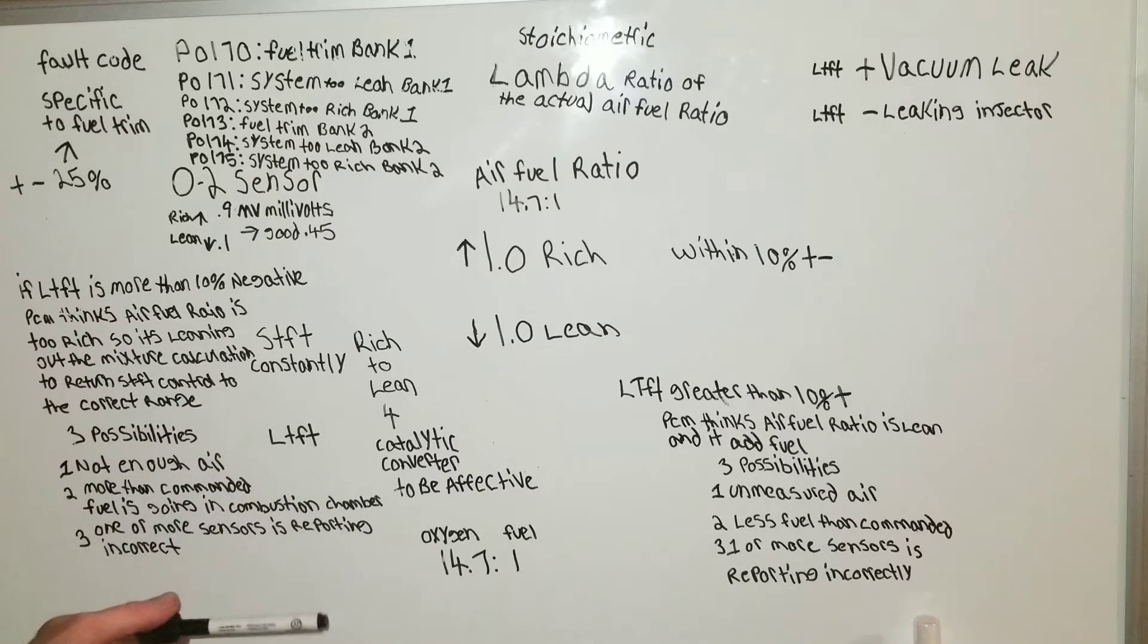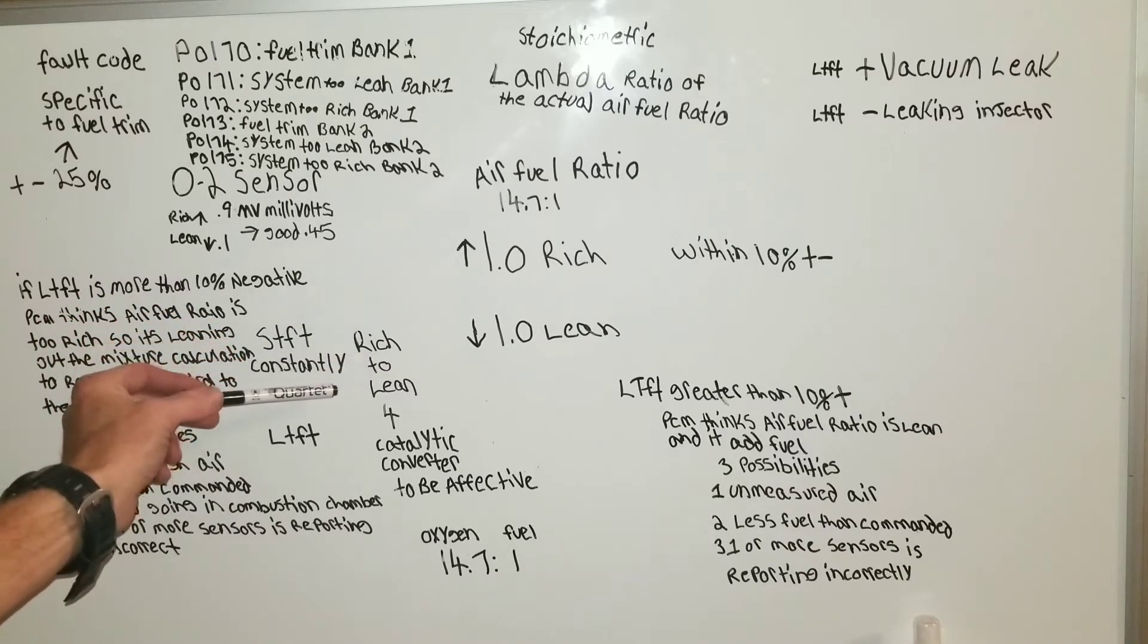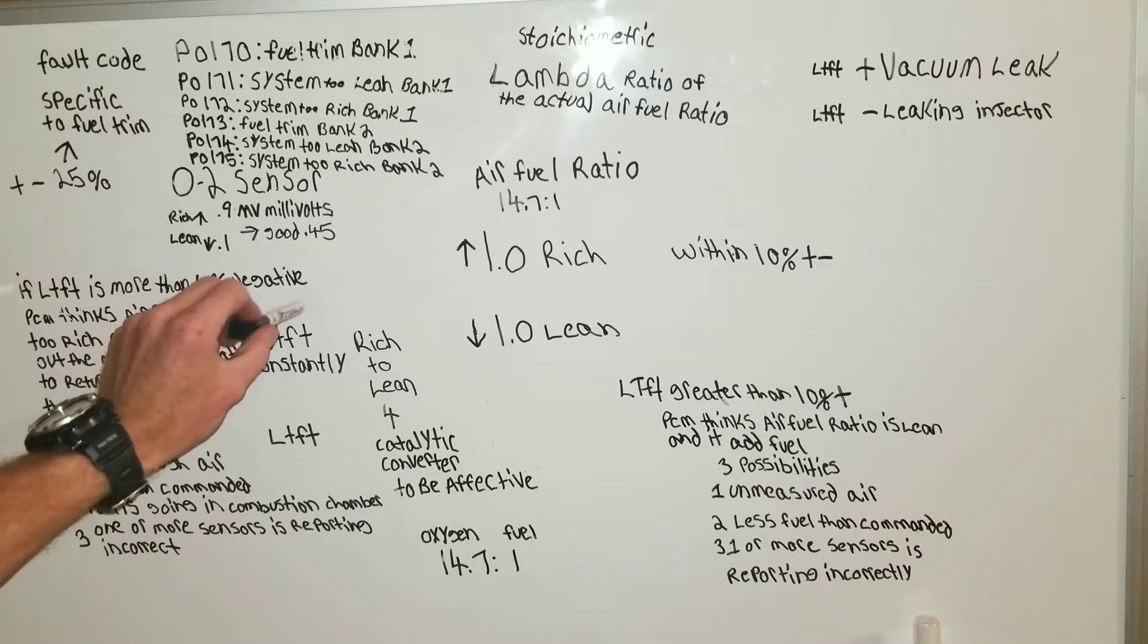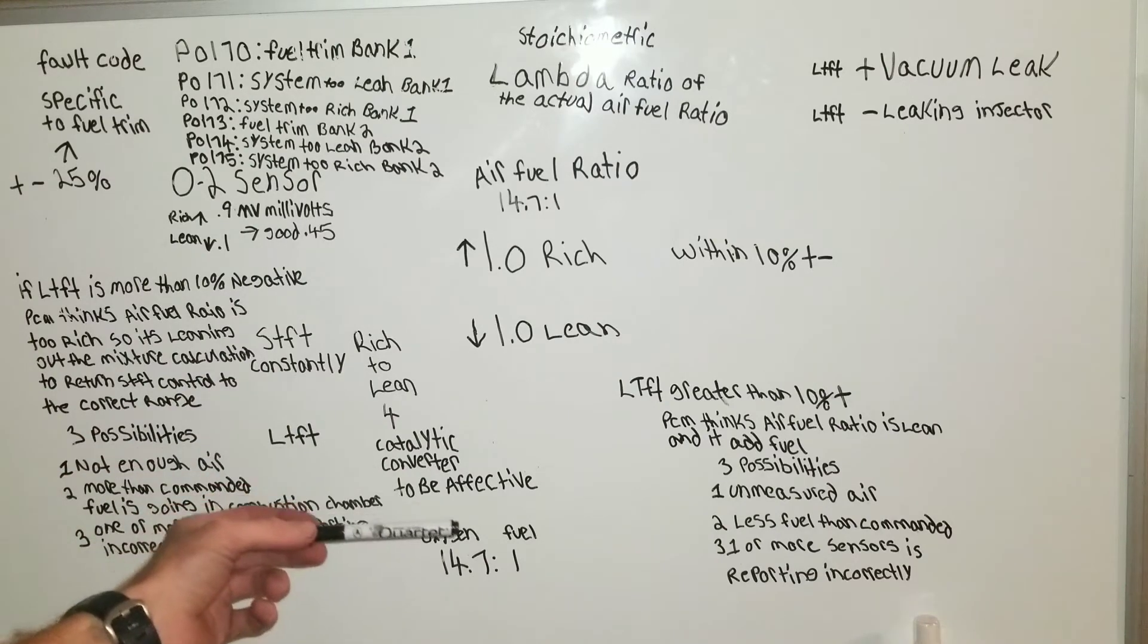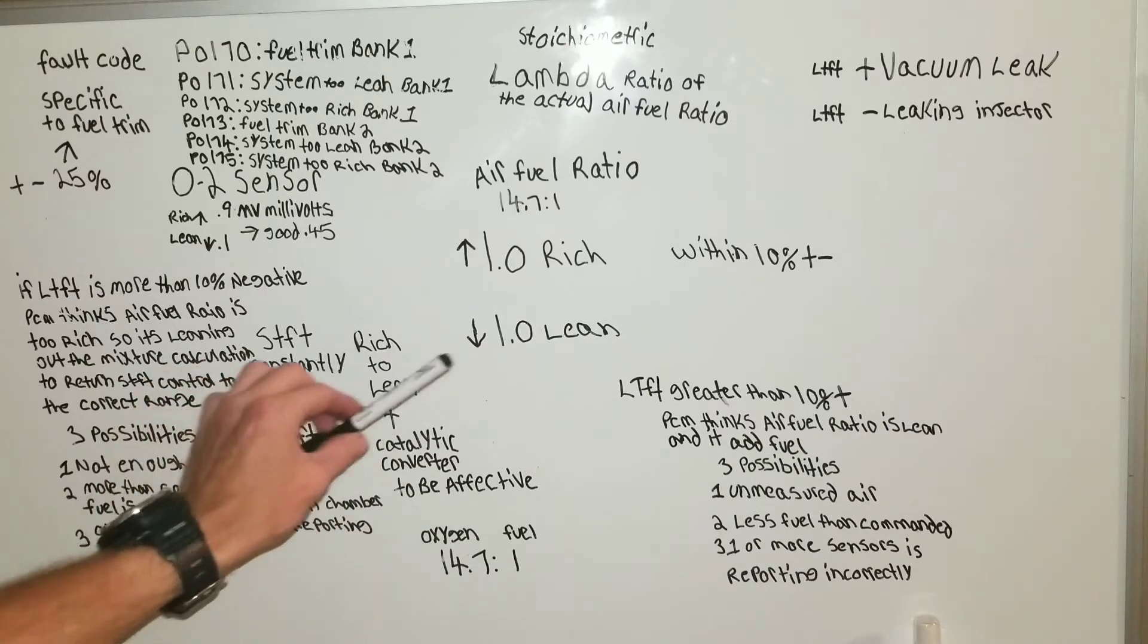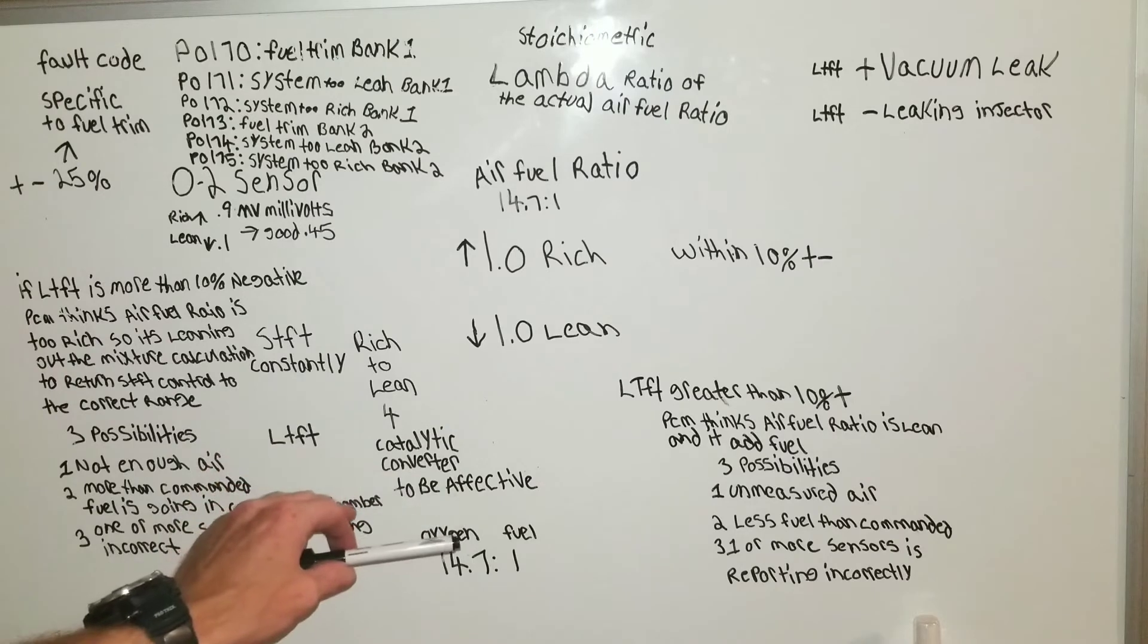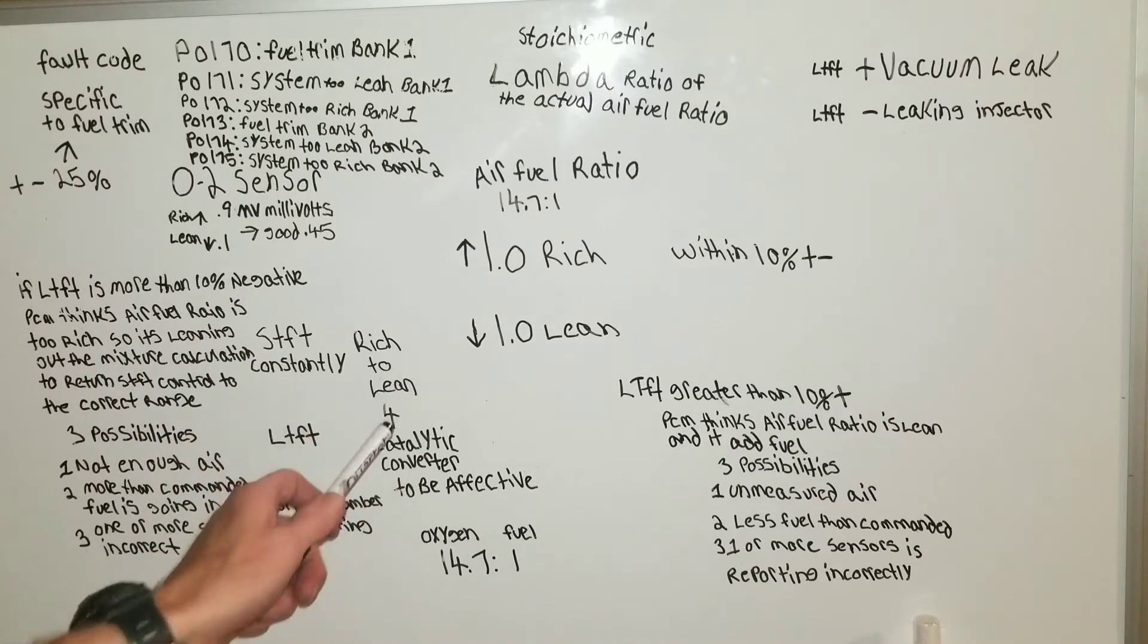But now if you have like negative 15 on short term and then positive 5 on your long term, then that's still bad because your short term is saying that there is a problem and it's adjusting it. So over time, that short term will adjust that long term to match the short term. That way it compensates for the problem. So it compensates for the problem with the short term temporarily until the long term catches up and once it catches up, the short term will go back to doing what it does and catch a problem or an issue when it comes up immediately.